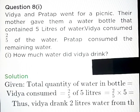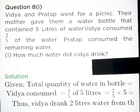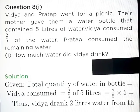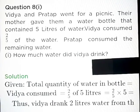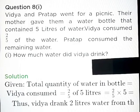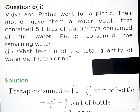Question number 8, Part A: Vidya and Pratap went for a picnic. Their mother gave them a water bottle that contained 5 litres of water. Vidya consumed 2 by 5 of the water; Pratap consumed the remaining water. How much water did Vidya drink? Answer: Given total quantity of water is equal to 5 litres. Vidya consumed 2 upon 5 of 5 litres is equal to 2 litres. Thus Vidya drank 2 litres of water.